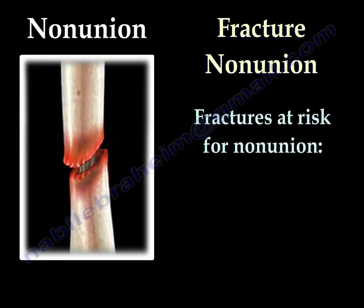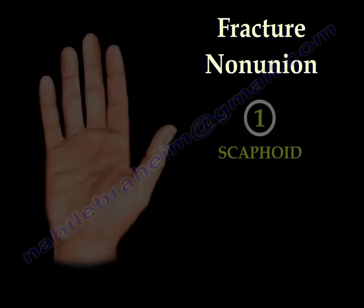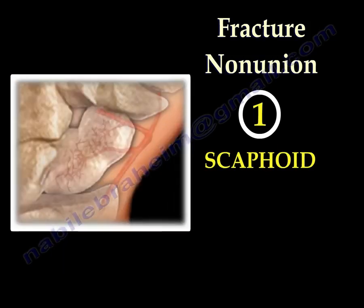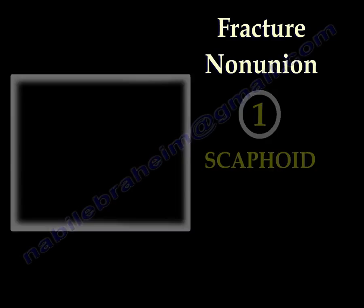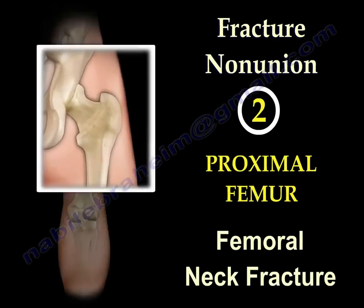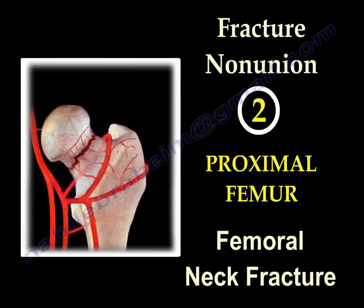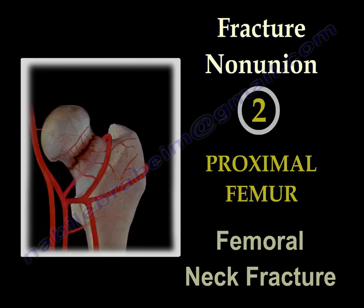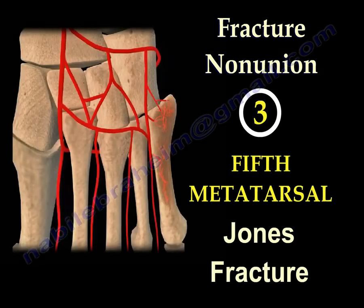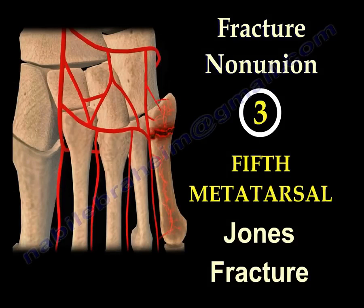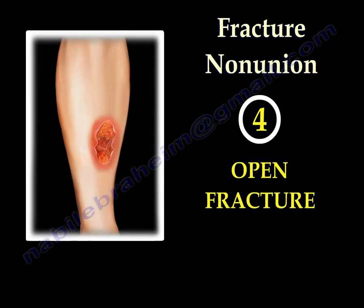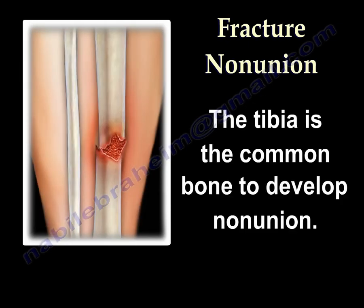Fractures at risk for non-union: one is scaphoid fracture, another one is fracture of the femoral neck, another one is the fifth metatarsal fracture — we call it Jones Fracture. The worst one is the open fracture, especially the tibia. The tibia is the most common bone to develop non-union.